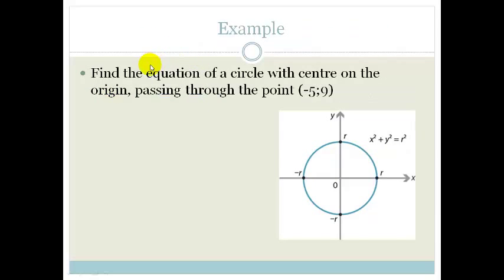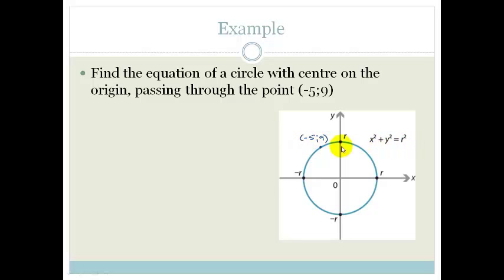Let's look at an example. Find the equation of the circle with the center on the origin passing through the point (-5, 9). So x is minus 5 and y is 9, so we're going up. Let's just place it over there at (-5, 9). All we have to do to solve this is substitute these values into that formula.